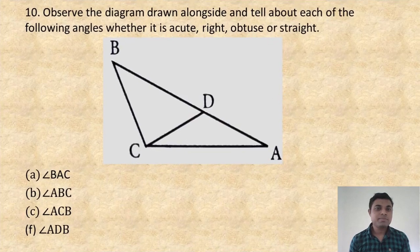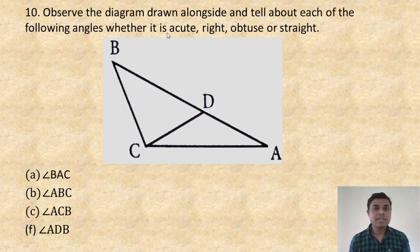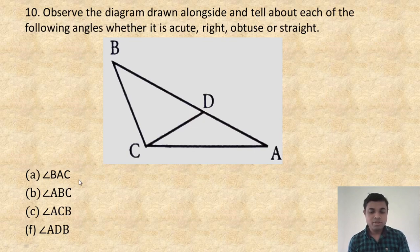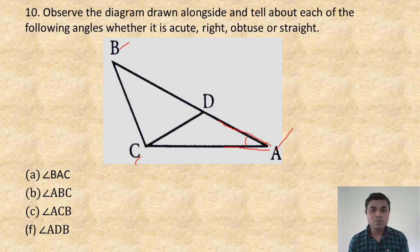Question number 10: observe the diagram and tell about each of the following angles — whether it is acute, right, obtuse, or straight. Angle BAC: here is B, here is A, here is C — that is this angle. Obviously it is acute angle, less than 90 degrees. Write: acute angle.